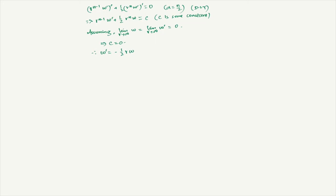With C = 0, we get W' = −(R/2) W. This is an ODE we can solve: W = D exp(−R²/4) for some constant D. This is all manipulation — we are manipulating our solution to look like this.